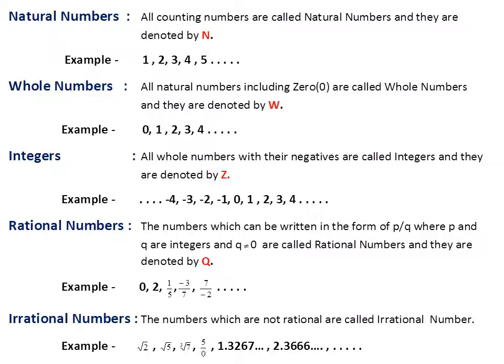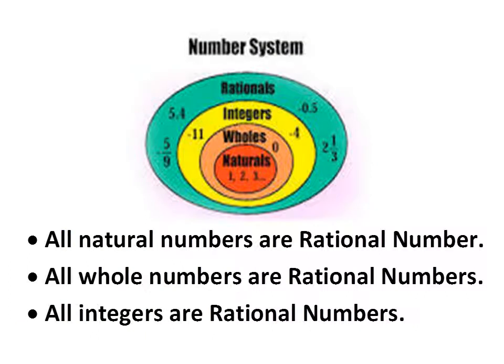Since 2 can be represented as 2/1 in the form of p upon q, it is also a rational number. Next topic is irrational numbers. The numbers which are not rational are called irrational numbers. For example: square root of 2, square root of 5, cube root of 7, and 1.7367... and so on, which are non-terminating. Also, a number like 5 upon 0 is also an irrational number. So these are the types of numbers in the number system.